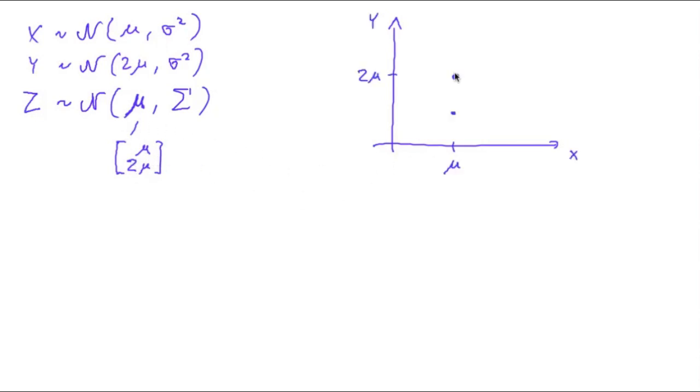So, one thing you know for sure is that the expectation of z is at mu, 2mu. Now, since I gave you the distribution of x and y, you know the two marginal distributions of z. And so, you know the two diagonal elements of the covariance matrix, which are sigma squared and sigma squared. But you don't know anything about the two other values.